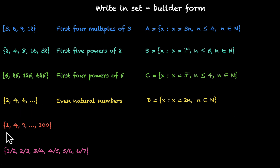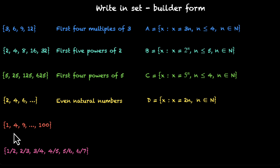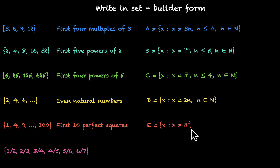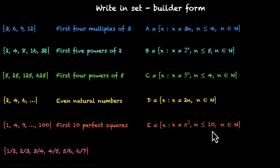Then we have 1, 4, 9, and so on up to 100. This is an answer to which question? Well, these are all perfect squares — 1 squared, 2 squared, 3 squared, and so on up to 10 squared. So we are looking for the first 10 perfect squares. We are looking for all x such that x is a perfect square, x equals n squared, where n is a natural number — so n belongs to natural numbers — and we have to restrict n because we are only looking for the first 10 values, so n is less than or equal to 10.